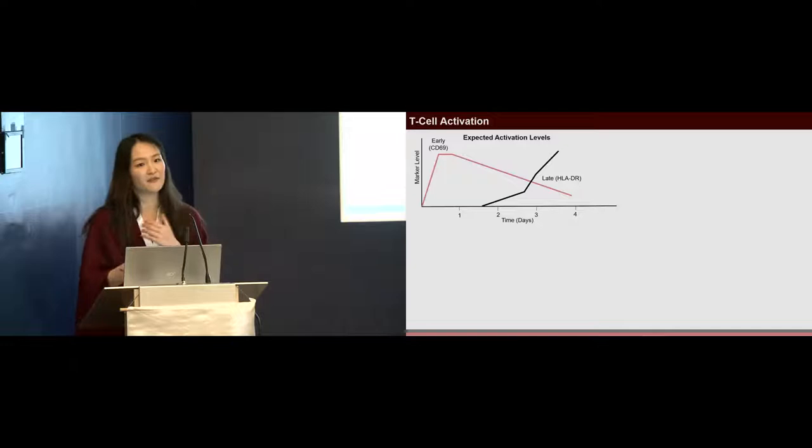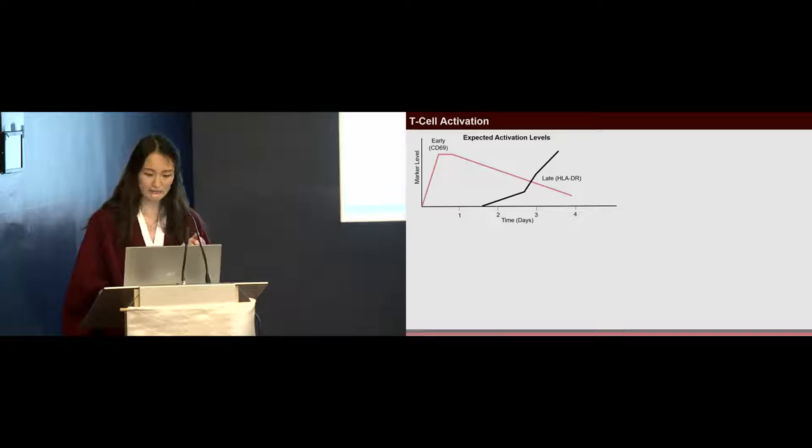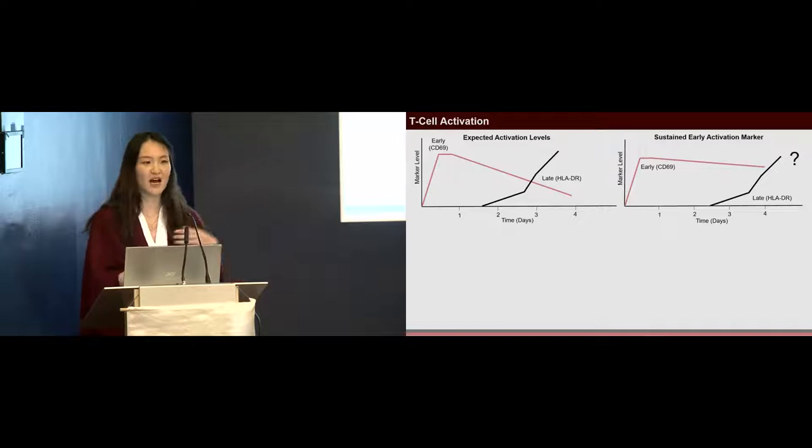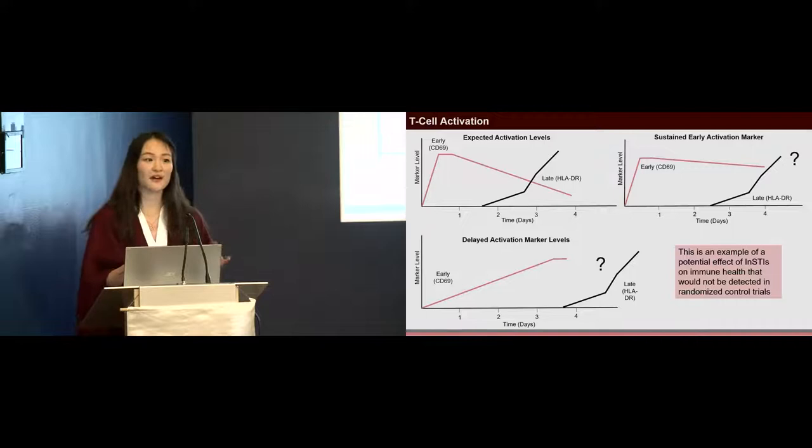We saw that some INSTIs inhibit immune activation, and we were wondering how and what could be potentially happening there. Could it be a sustained early activation marker resulting in inhibition of some cascades that are required for cell proliferation? Or could it be a delayed reaction in all the activation marker rising, resulting in non-proliferating cells? This is an example of a potential effect of INSTIs or antiretrovirals on immune health that would not be detected during clinical trials.